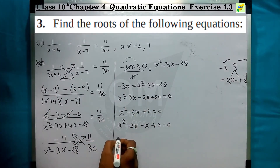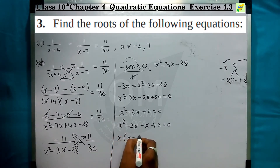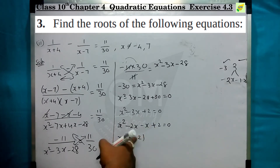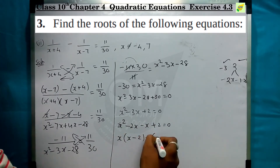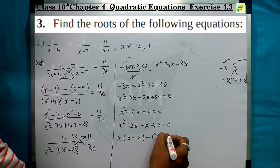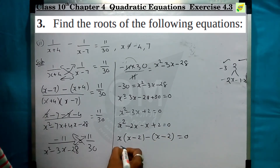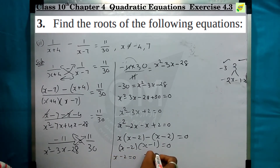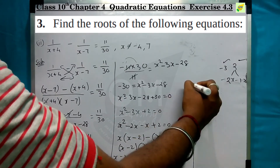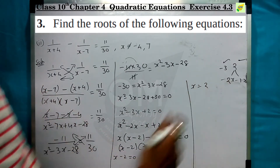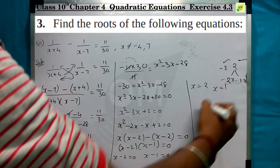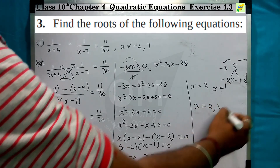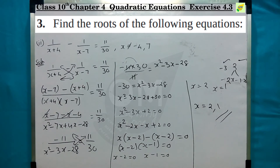Starting this step: x minus 2 goes and x minus 1 goes. Then plus minus two equal to zero. x minus 2 is equal to 0, x minus 1 is equal to 1. Therefore x is equal to plus 2 and x is equal to plus 1.